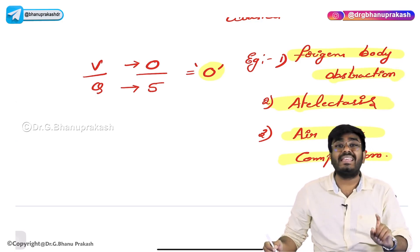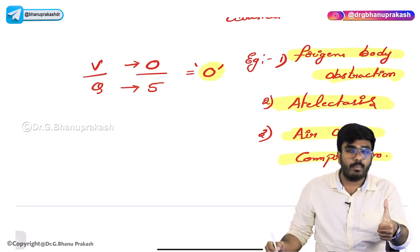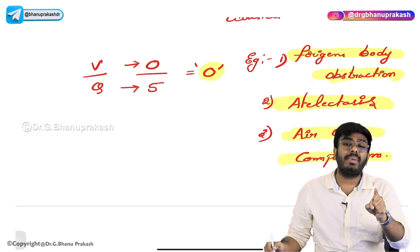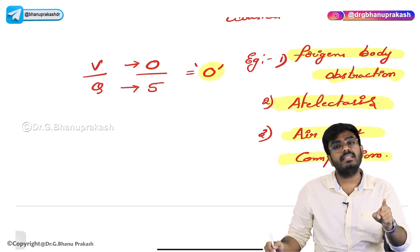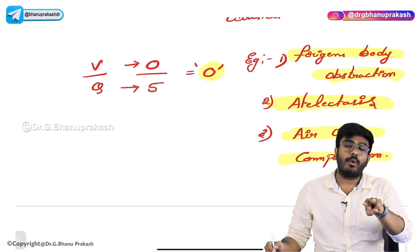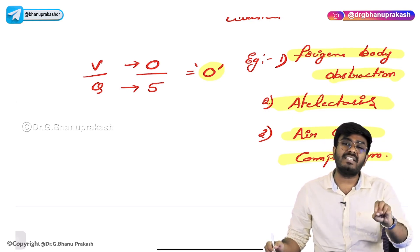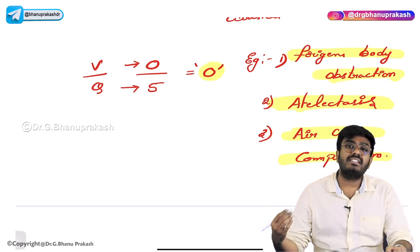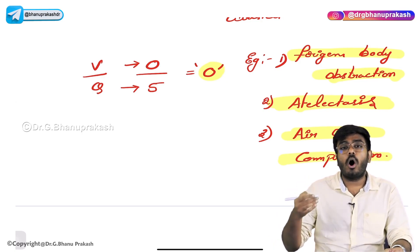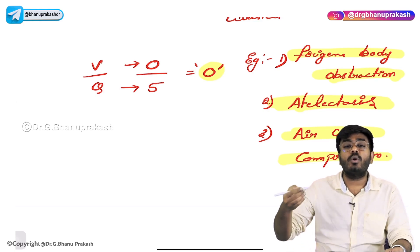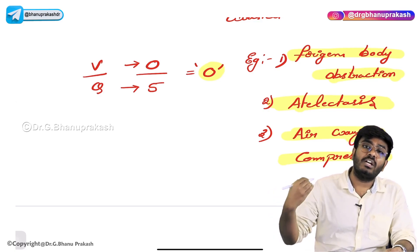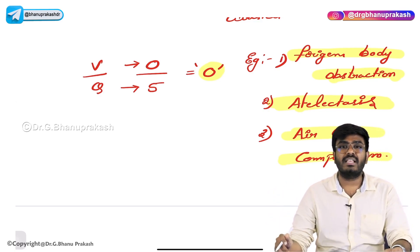To summarize: VQ ratio is zero in three conditions — foreign body obstruction, atelectasis, and airway compression. VQ ratio is infinity in two examples — pulmonary embolism (pathological) and anatomical dead space (physiological). We have covered the important topic of ventilation-perfusion mismatch. In the next video, we'll discuss the exchange and diffusion of gases, how oxygen is transported to the tissues, and how carbon dioxide is transported from the tissues back to the lungs. Hope the video is helpful. Thank you.